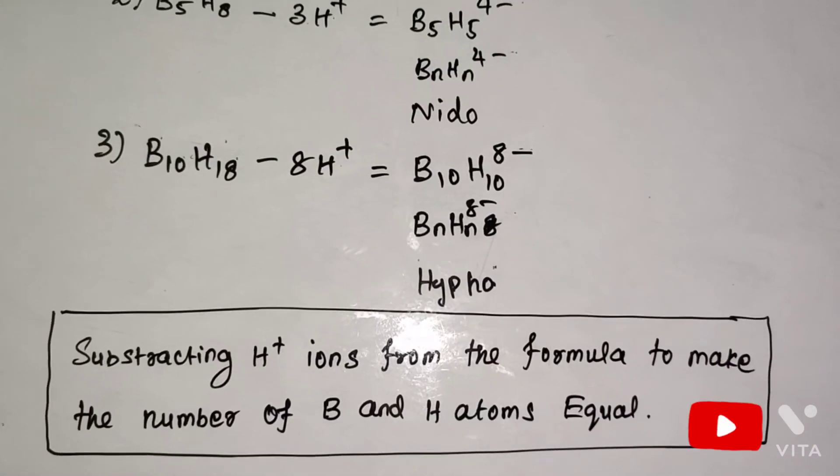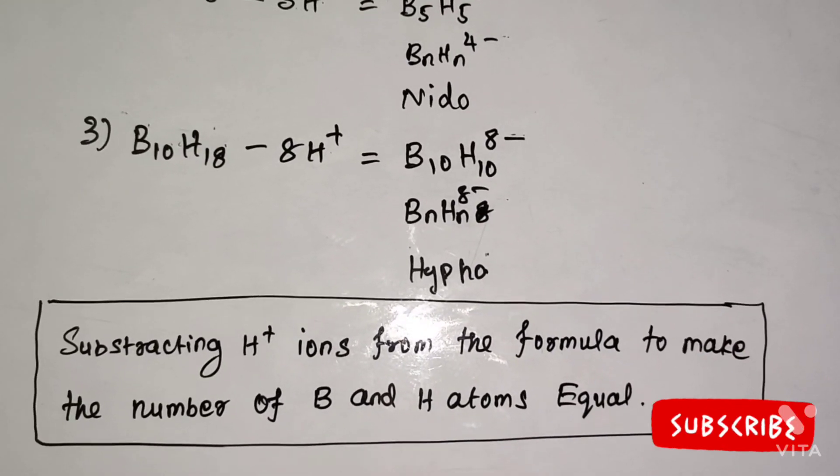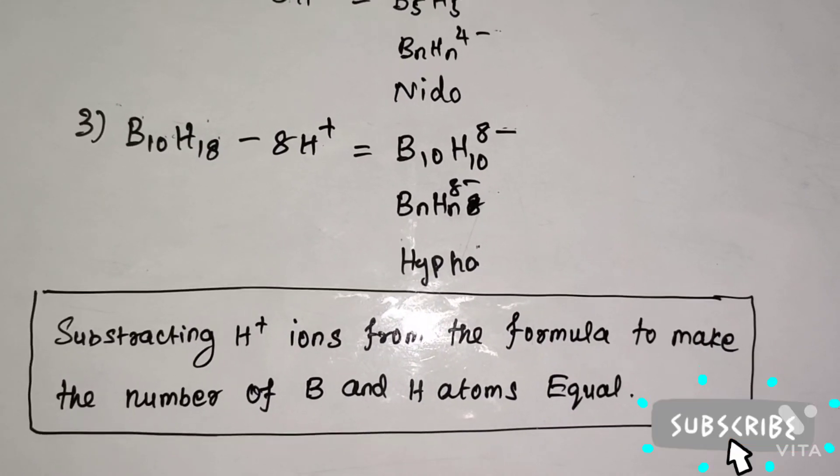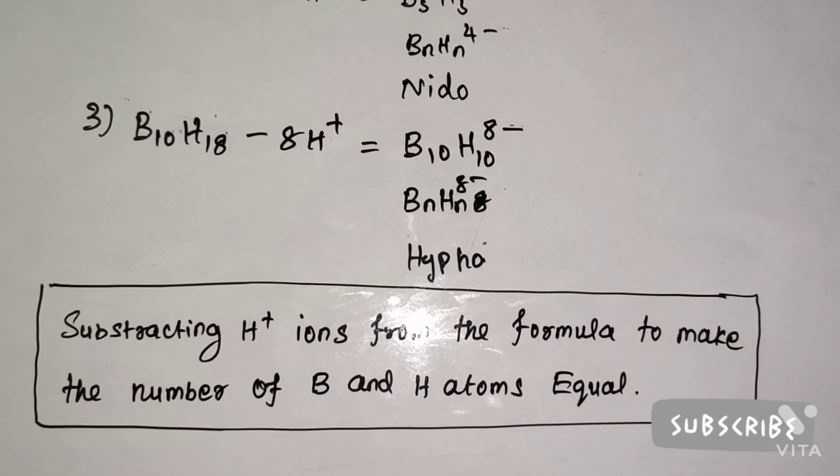Hi friends, you should know the important concept to find boron cluster structure. The concept is subtracting H+ ions from the formula to make the number of boron and hydrogen atoms equal.